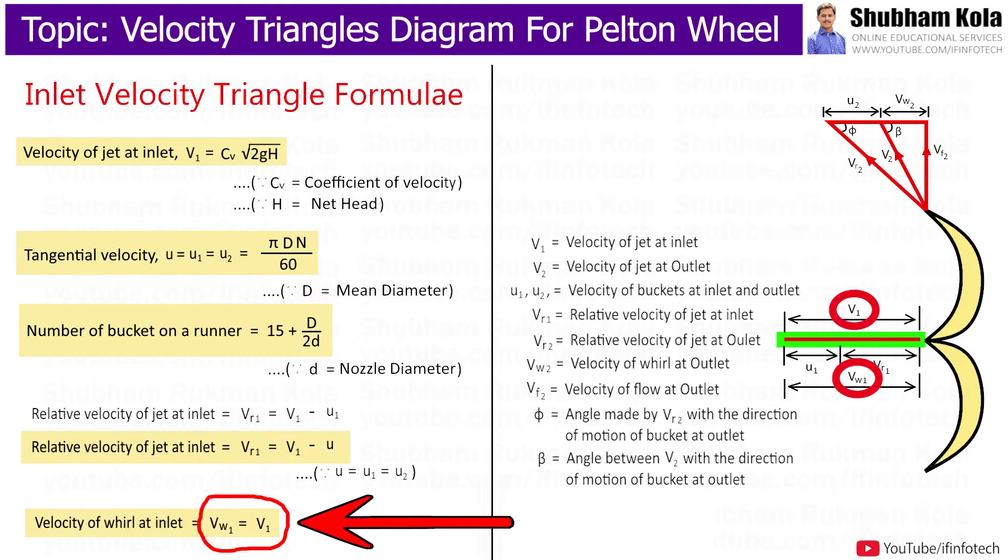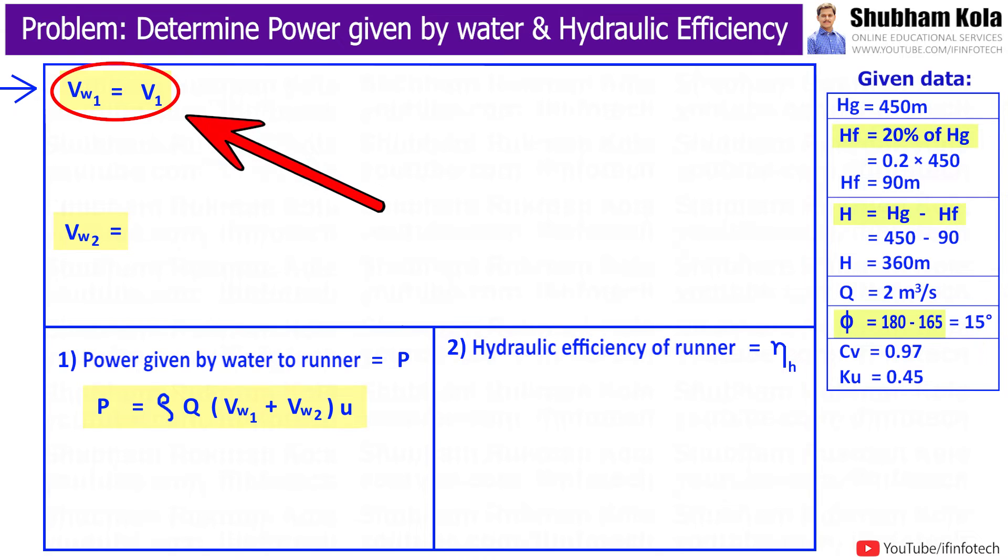In the previous video, we had already seen for Pelton wheel turbine, Vw1 equal to V1. And velocity of jet V1 is given by formula Cv into square root of 2gH.